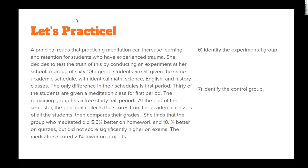The only difference in their schedules is first period. 30 of the students are given a meditation class for first period. The remaining group has a free study hall period. At the end of the semester, the principal collects the scores from the academic classes of all the students, then compares their grades.